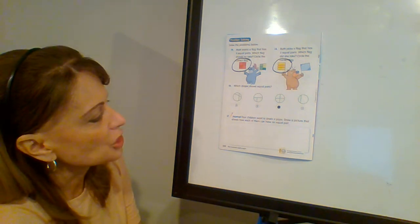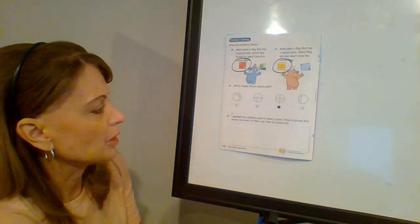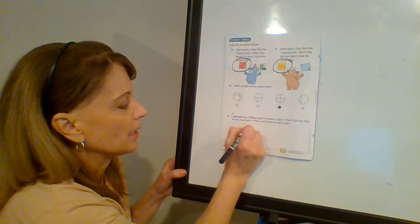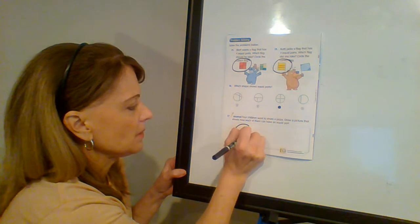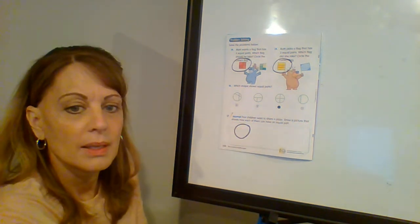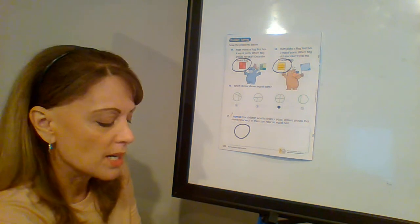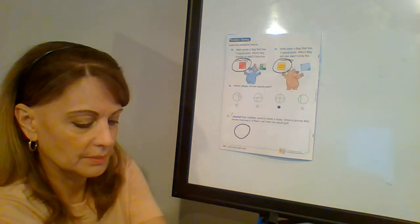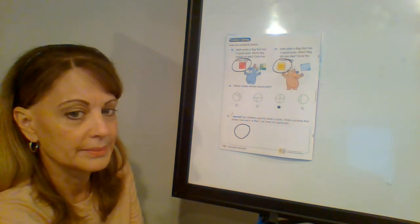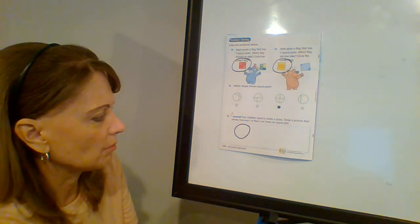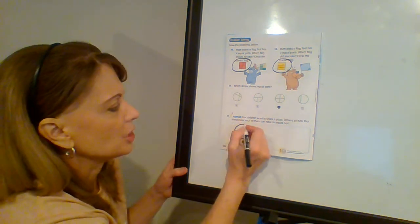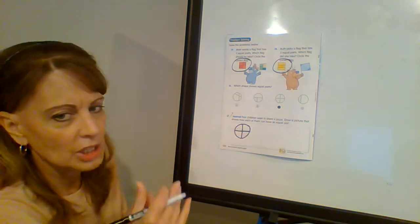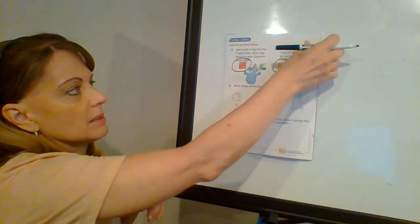Number seventeen. Four children want to share a pizza. Draw a picture that shows how each of them can have an equal part. So we're going to pick a round pizza. Go ahead and divide that into four equal pieces. My circle is not really very round and I apologize. But if you go straight down, straight across, you'll have about equal pieces.